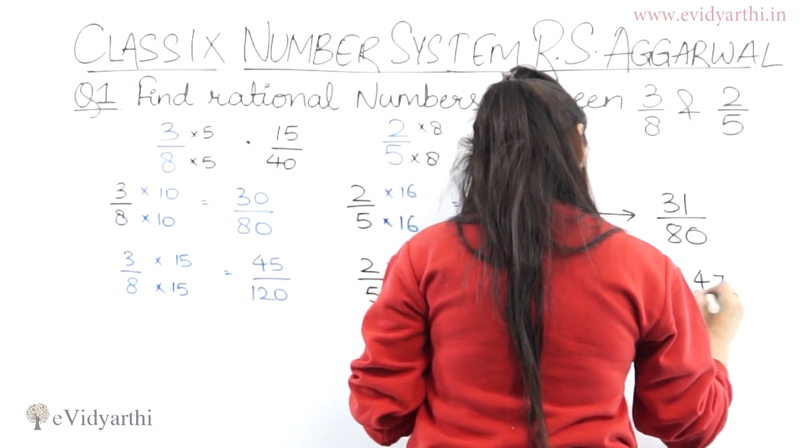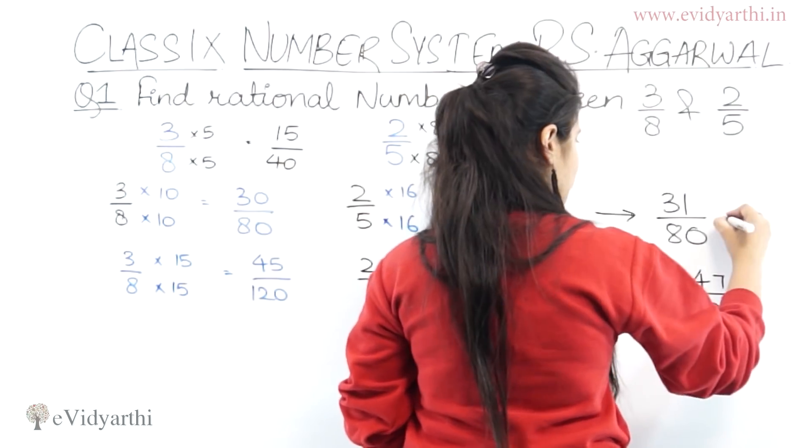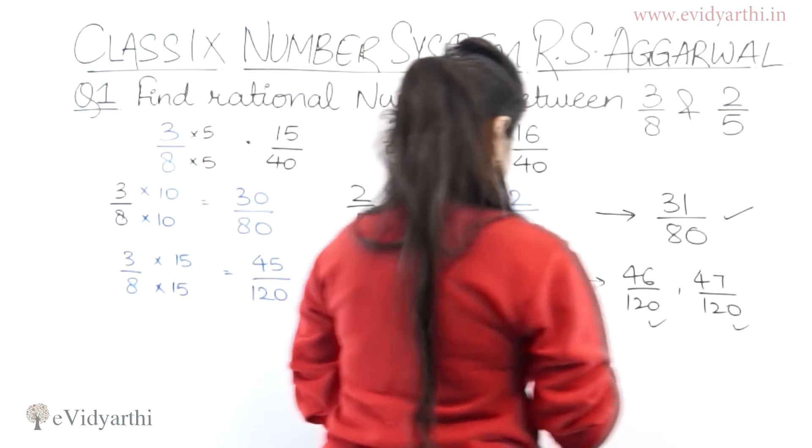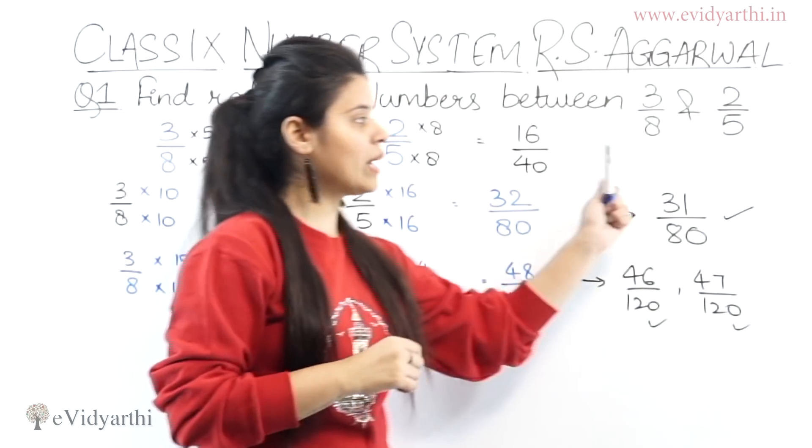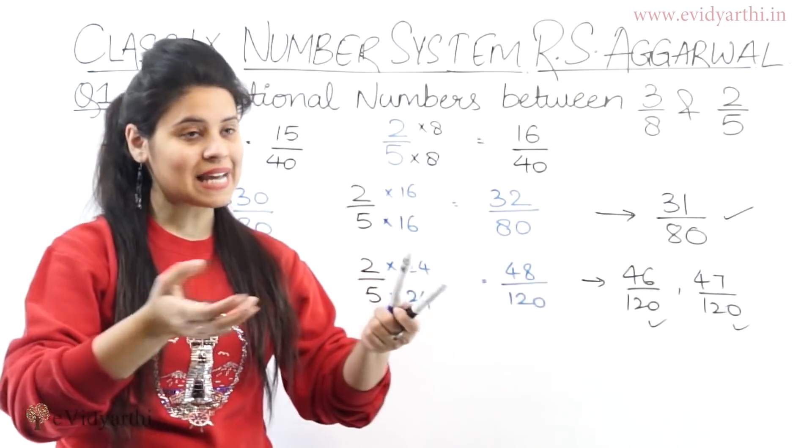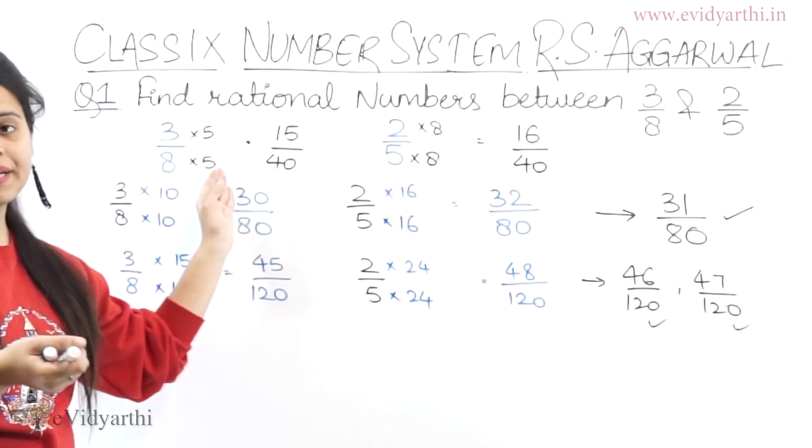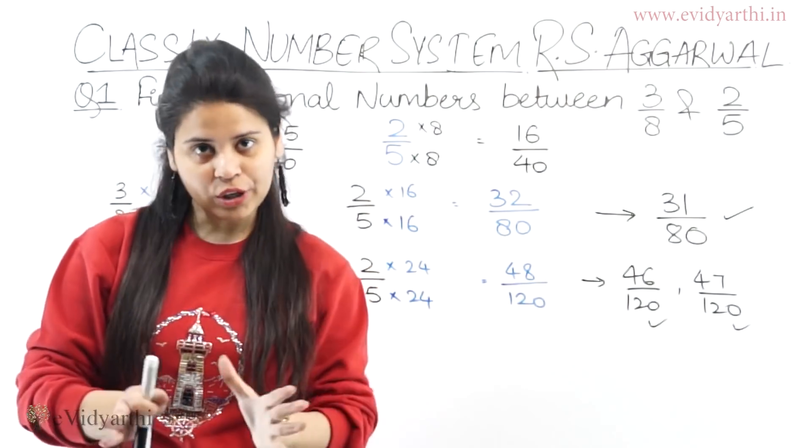So, now 45 upon 120 and 48 upon 120. How many do you get? We will get 46 upon 120 and then we have 47 upon 120. So, that was 1, 2, 3. Three rational numbers. In between these two. Again, if we want to find more, then we can make this denominator even bigger. Okay.